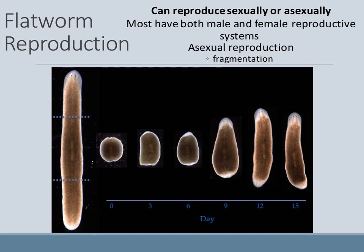Flatworms can also reproduce asexually through fragmentation. If a planaria — which is a type of flatworm — gets cut in half, you can see the dashed lines showing where it had been cut. Over the course of many days, each piece will return to a normal planarian, a normal flatworm.